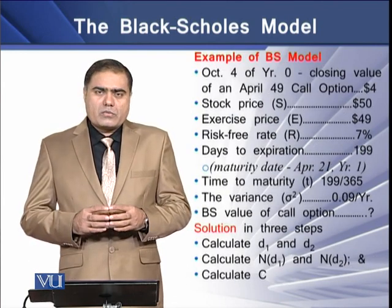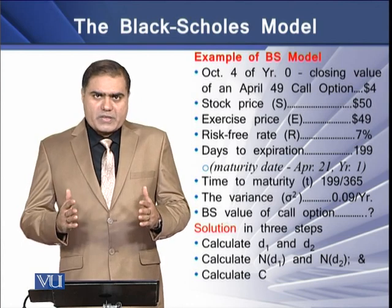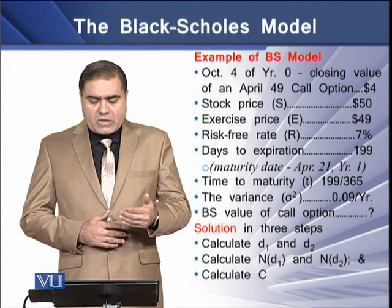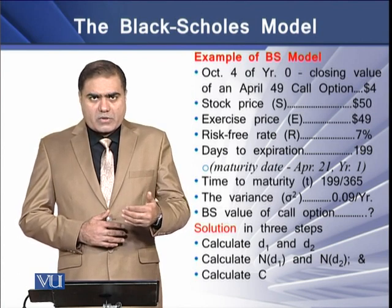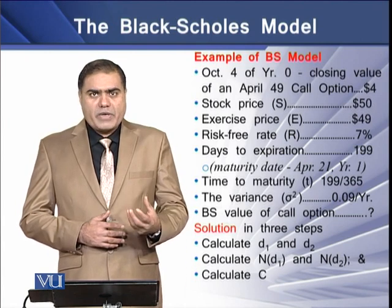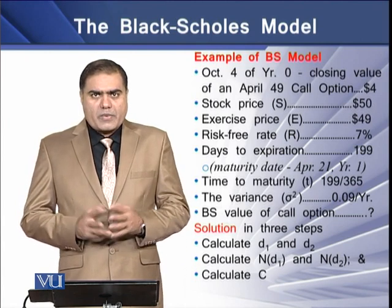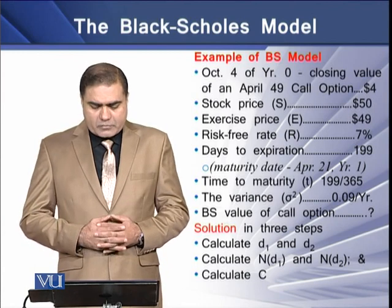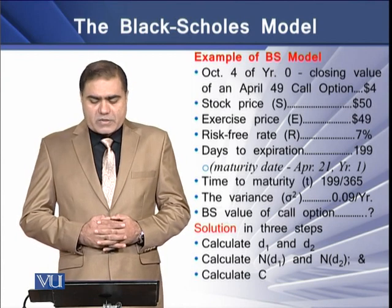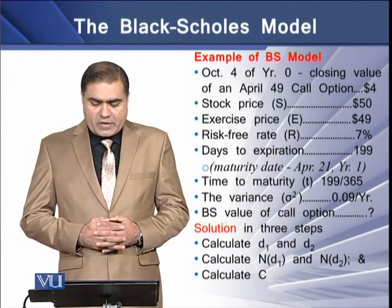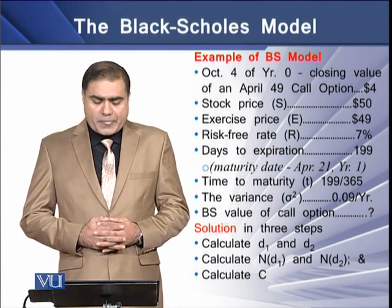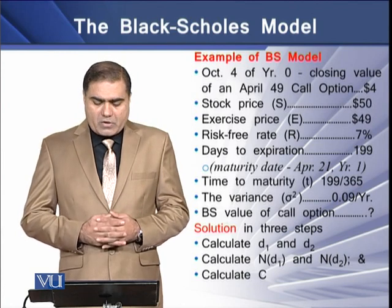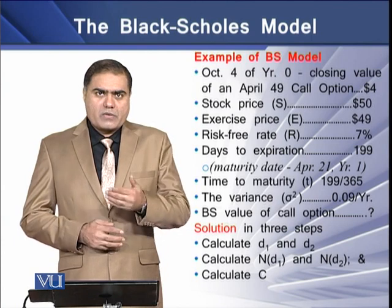To understand the BS model, consider an example. At time 0, October 4th, the call option of April 49 has a price of $4. The stock price at time 0 is $50, the exercise price is $49, the risk-free rate is 7%, and this call has 199 days to expiry, with a maturity date of April 21st of year 1.